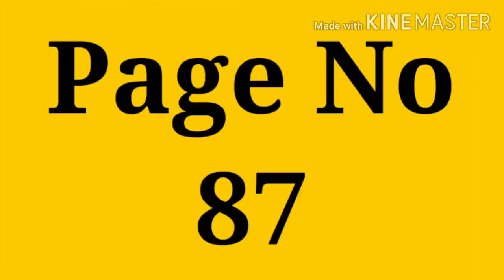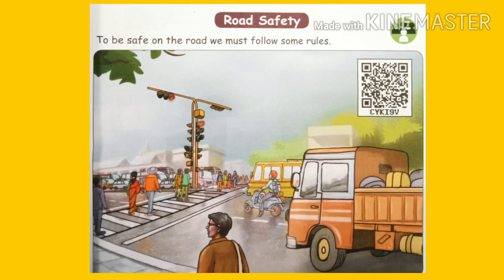Take page number 87 — Road Safety. To be safe on the road, we must follow some rules. When we cross the road, when we walk on the road, we must follow certain rules to keep ourselves safe. Let us see what rules we must follow.